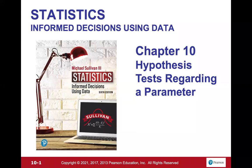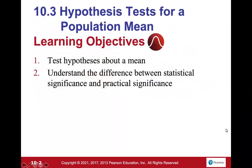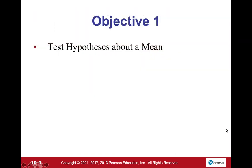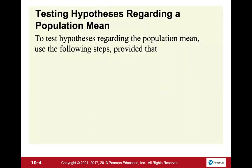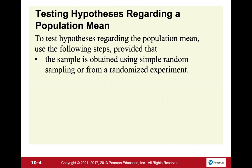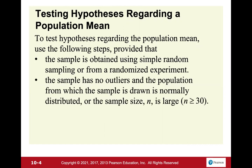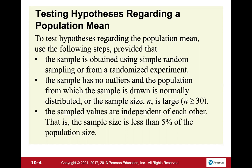Chapter 10 hypothesis test regarding a parameter — this time we're going over Section 10.3, hypothesis test for a population mean. To test a hypothesis regarding a population mean, use the following steps, provided that: the sample is obtained using simple random sampling or from a randomized experiment; the sample has no outliers and the population is normally distributed, or the sample size n is greater than 30; and the sample values are independent, meaning the sample size is less than five percent of the population size.